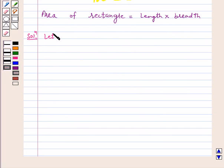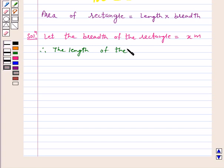Solution. Let the breadth of the rectangle be x meters. Since the question states the length is twice the breadth, therefore, the length of the rectangle is 2x meters.